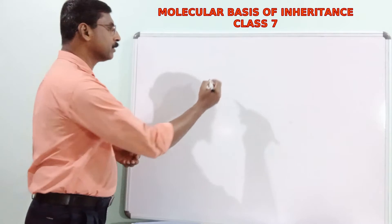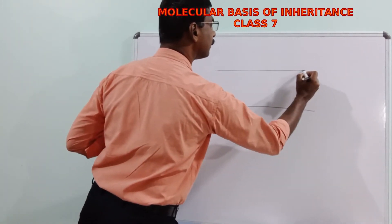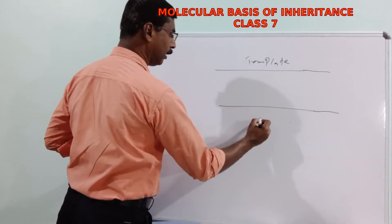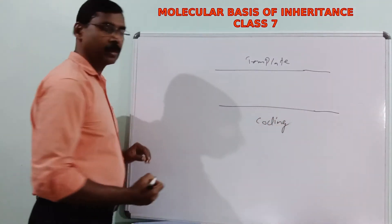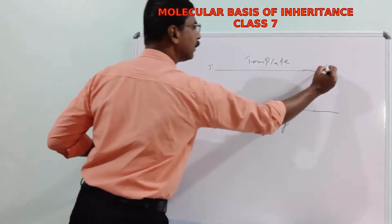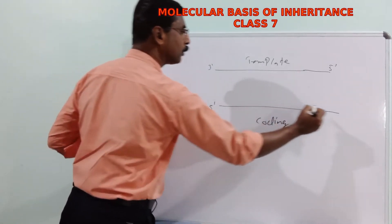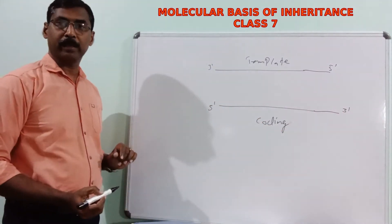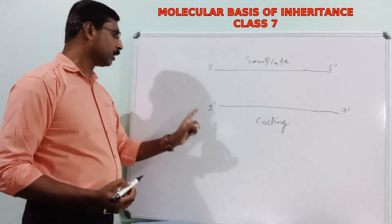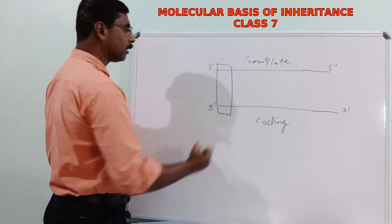The transcription unit consists of both strands of the DNA molecule: the template strand and the coding strand. The template strand runs in the direction of 3 prime to 5 prime, and the coding strand runs in the direction of 5 prime to 3 prime. At the 3 prime end of the template strand, or the 5 prime end of the coding strand, there is a promoter region.